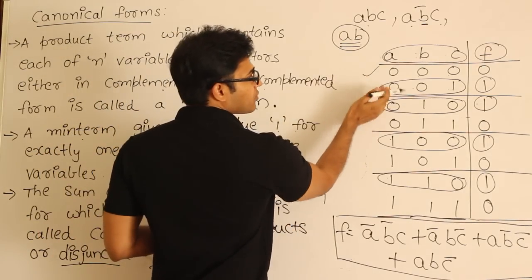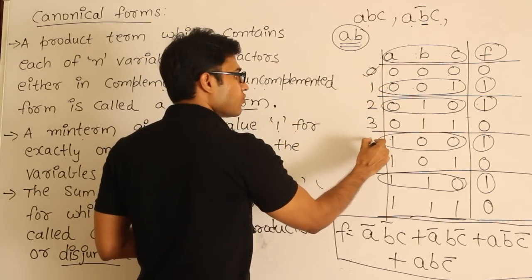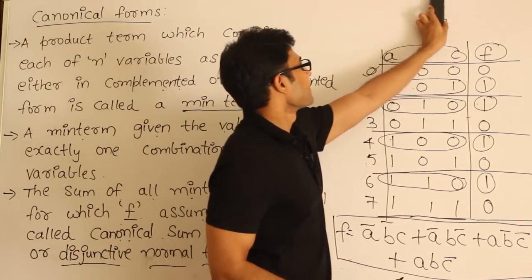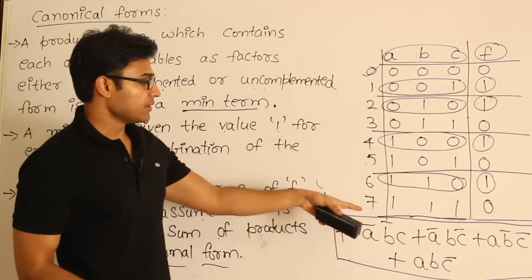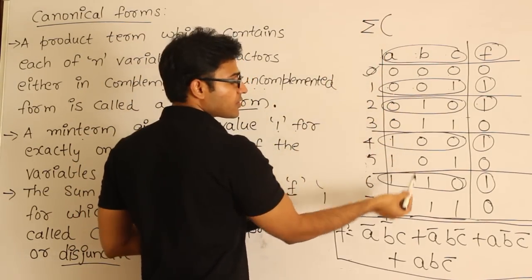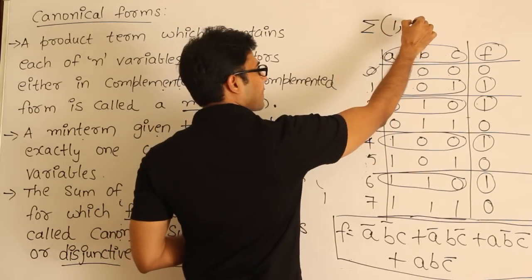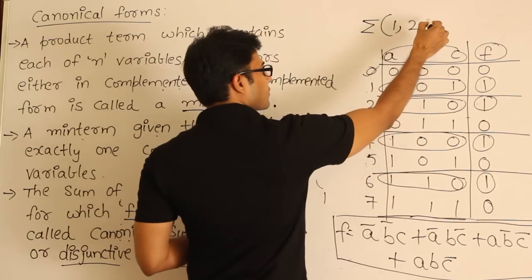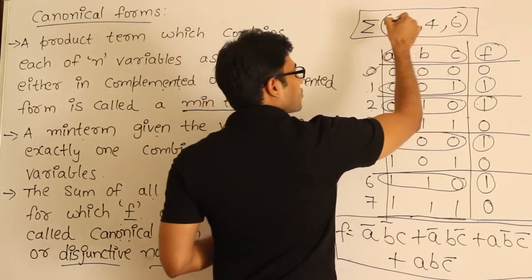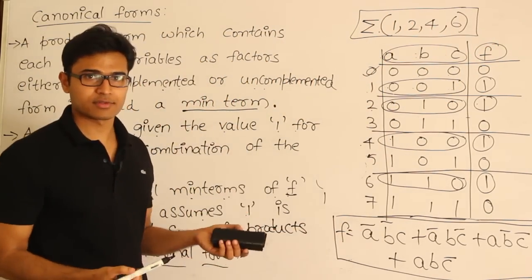In shorthand notation, converting the input combinations to decimal: 0,0,1 is 1; 0,1,0 is 2; 1,0,0 is 4; and 1,1,0 is 6. So the function can be written compactly as f = Σ(1, 2, 4, 6). This compact representation using sigma is equivalent to writing out the full sum of minterms.